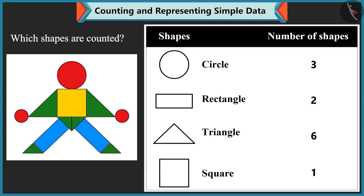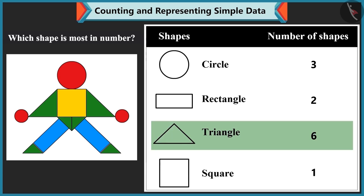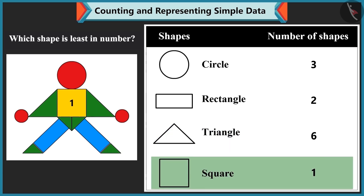Now, tell me which shape is most in number? There are 6 triangles over here. So, this means triangles are most. There is only one square. So, square shape is least in number. Perfect, Bubbly.